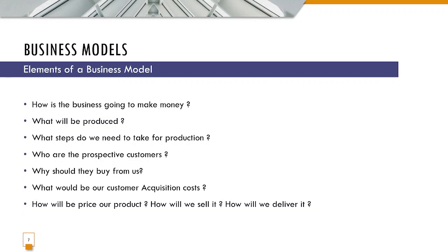A business model is basically a plan that details how the firm is going to make money by selling things. If I take an example, it's like when you want to sell lemonade — you have to think how much it costs to make that lemonade, how much you're going to sell it for, and how many people might buy it. For a bigger company, they have to think: who will buy their product or service, how much it will cost to make, how much they can sell it for, what the margins will be, what the competition is like, and what the pricing strategy will be.